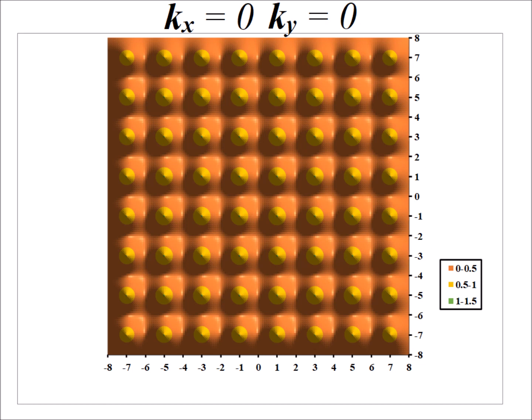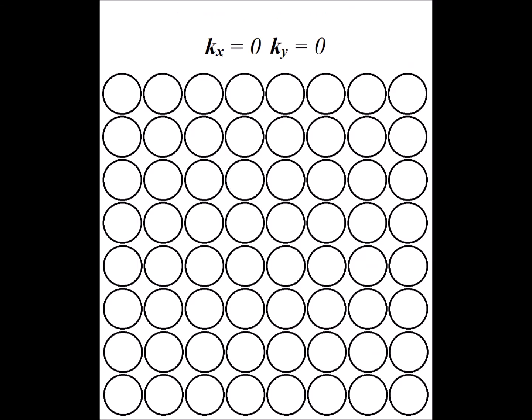The case where kx and ky are both zero is equivalent to an all-bonding combination. All 64 atoms have their 1s orbitals with exactly the same shape, because they all have the same color in our representation. This means that all the interactions between neighbors are going to be bonding.